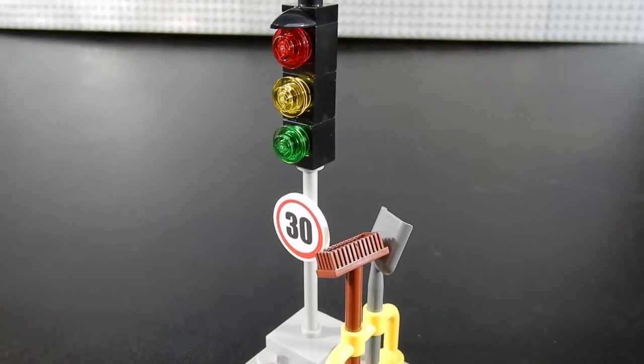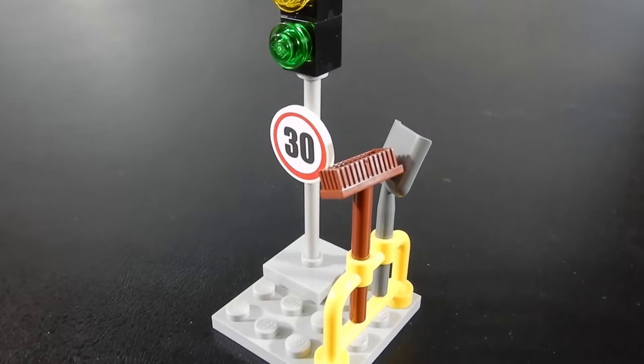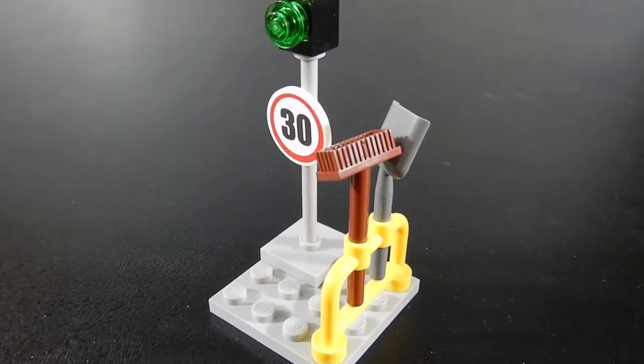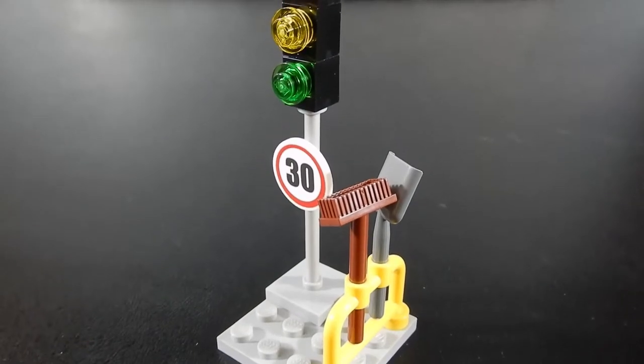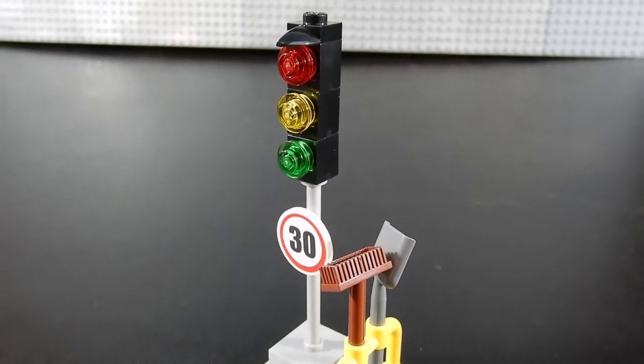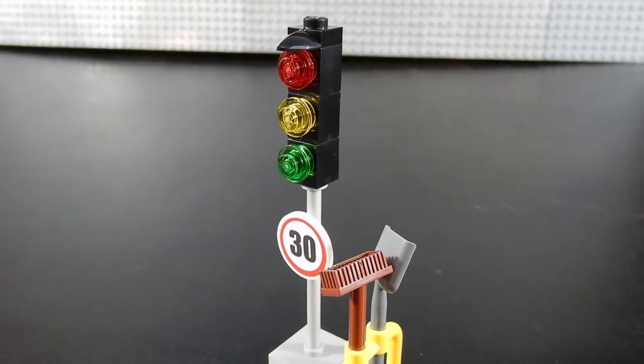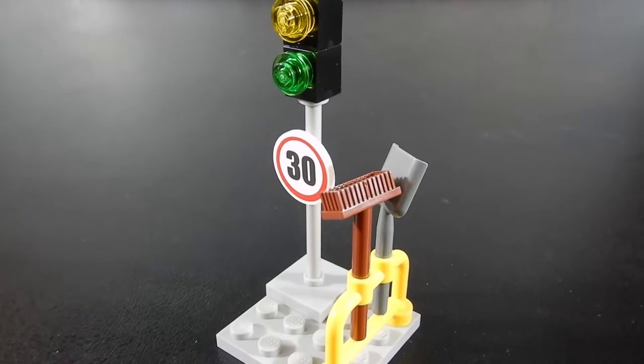Next we have this traffic light and speed sign. And then there's also this tool rack that has a broom and a shovel in it. Presumably for someone to clean up the street after maybe an accident or something like that. But that's kind of a nice build for traffic light. The 30 on the speed limit sign is a sticker.